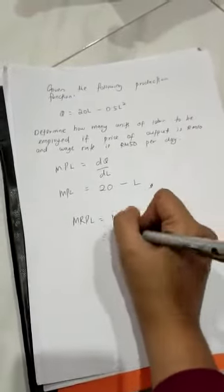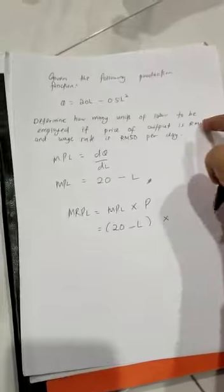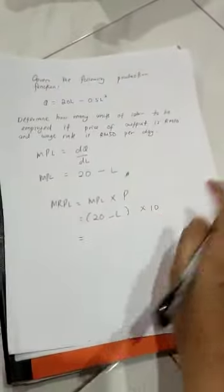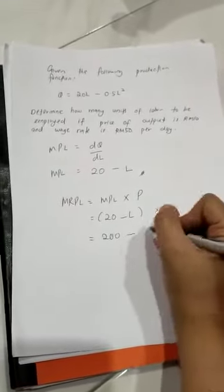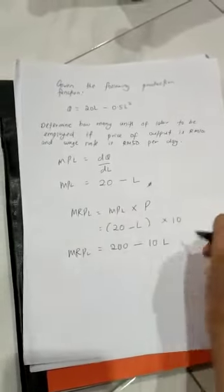MPL is 20 minus L, times the price. So 20 times 10 is 200, minus L times 10 is 10L. This gives us MRPL = 200 - 10L.